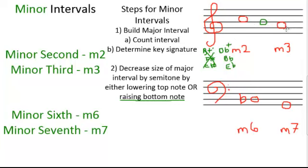We'll do one more example: a minor third descending from the A. We count down three, down to an F. Using trial and error, we'll try F major, because that's the note we wrote in, and see if A is within F major. The key of F major has one accidental: B flat. So A is within the key of F major, meaning right now we have a major third. Our next step is to decrease that interval by raising the bottom note, so we'll make that F into an F sharp, raising it by a semitone. And we now have a minor third.